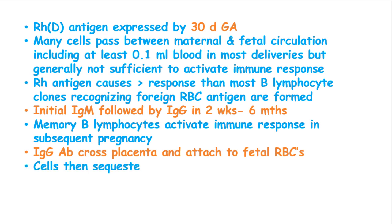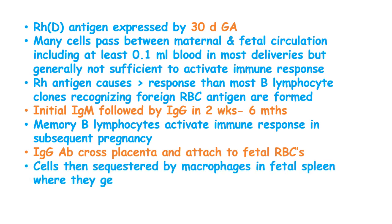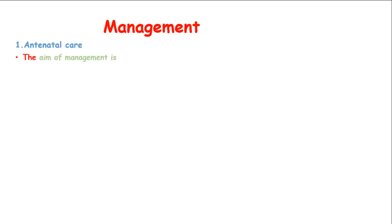IgG antibody crosses the placenta and attacks the fetal red blood cells. These cells then become sequestrated by the macrophages in the fetus's spleen where they get hemolyzed, leading to fetal anemia. In management of RH isoimmunization, we have antenatal management, whereby the aim of this management is to save the unborn baby.